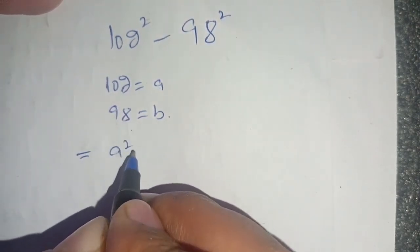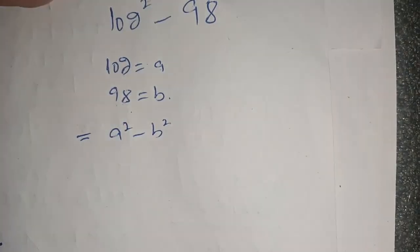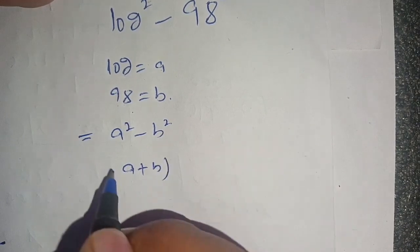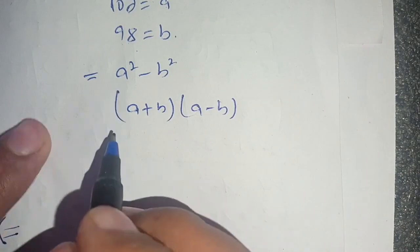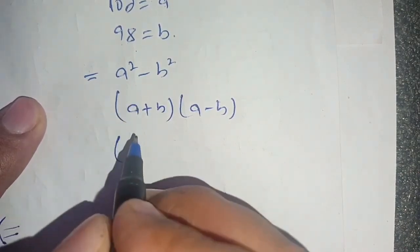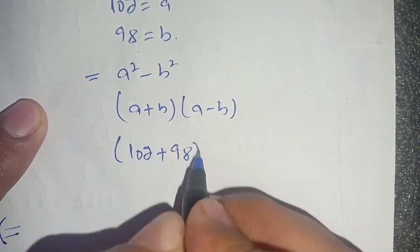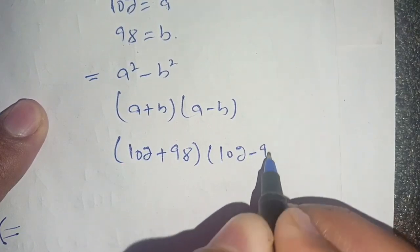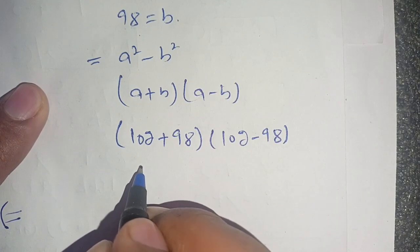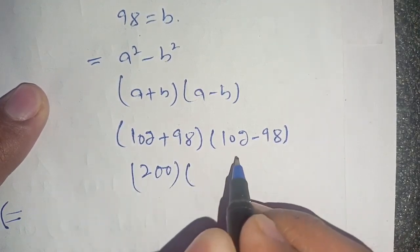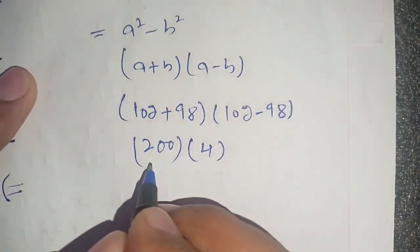Thus our problem becomes a squared minus b squared. We know that a squared minus b squared is equal to (a + b)(a - b). Now we substitute the values: in place of a we substitute 102, in place of b we substitute 98, giving us (102 + 98) times (102 - 98). So 102 + 98 becomes 200, and 102 - 98 becomes 4.